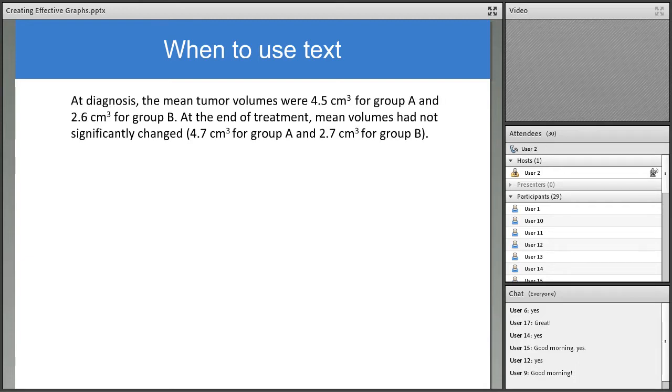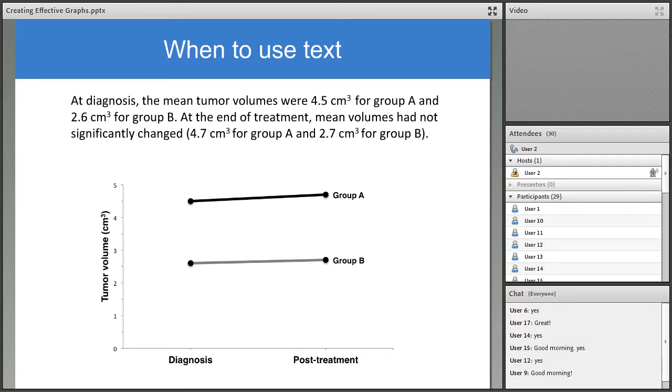For example, here are some data written in sentence form. In diagnosis, the mean tumor volumes were 4.5 cubic centimeters for group A and 2.6 for group B. At the end of treatment, mean volumes had not significantly changed: 4.7 for group A and 2.7 for group B. Very clear, right? So seeing these data in the form of a line graph does not aid our understanding. This graph illustrates both of the problems I mentioned. There are not enough data here to justify the space used by the graph. The graph is too simple. And furthermore, there's no interesting trend to look at.